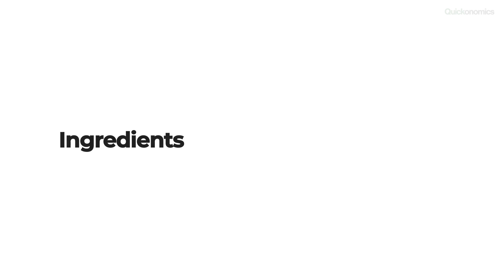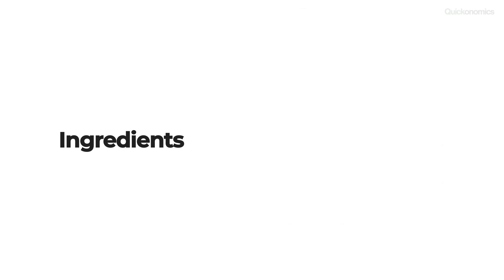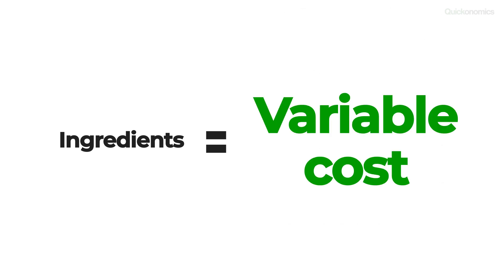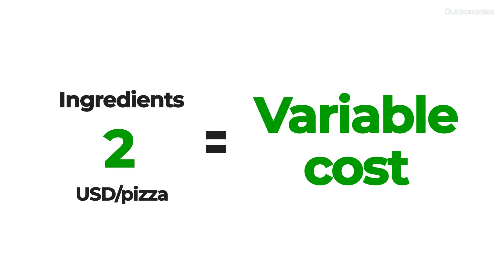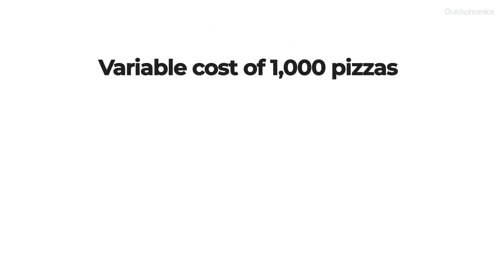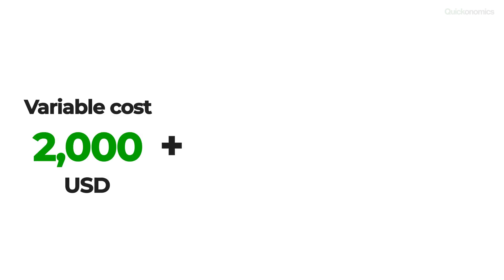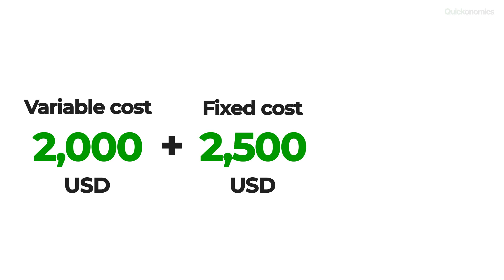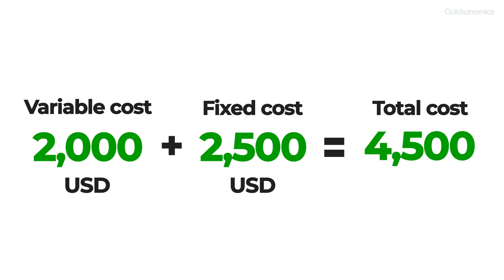Meanwhile, they also have to buy ingredients such as flour, water, cheese, and some other stuff to make their pizza. The costs of those ingredients are variable costs. Let's say they add up to exactly two dollars per pizza. In that case, the variable costs of producing 1000 pizzas is 2000 dollars. If we add these variable costs of 2000 dollars to the fixed costs of two and a half thousand dollars, we find that the total cost adds up to four and a half thousand dollars.